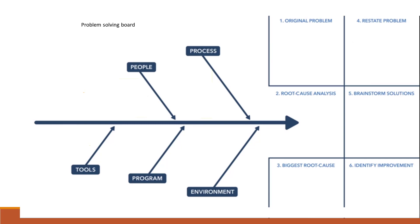You can see this has got the six areas: one, original problem, through to six, identifying improvement which is the backlog, with root cause analysis, biggest root cause problems, restate the problem, and brainstorming solutions in between. Hopefully we'll be working our way through a list of problems, sticking them on that board, and we'll have an output of identifying improvements.